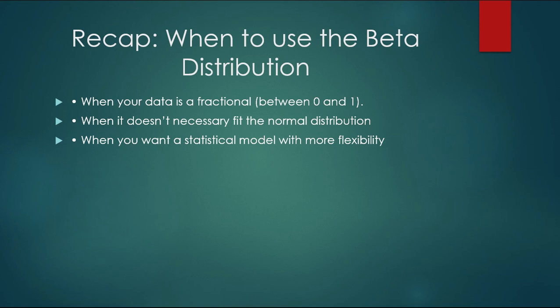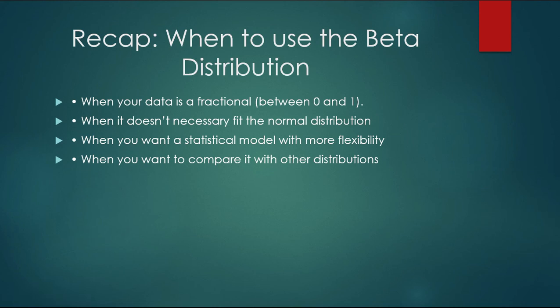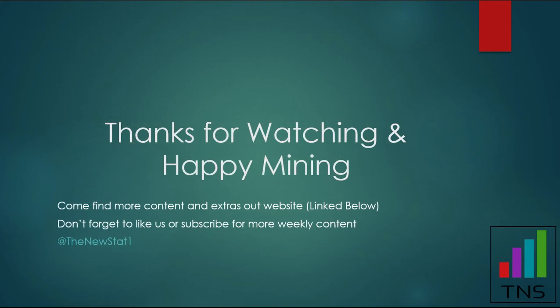Of course, you can also use the beta distribution to compare how it stacks up against other distributions, like we did in the baseball dataset where we had percent hits. We found our data was pretty normal for the most part, so both distributions fit fairly well. That's really all we have for you today — thanks for watching, happy mining! If you liked this video, we have an entire article on the beta distribution linked below on our website.